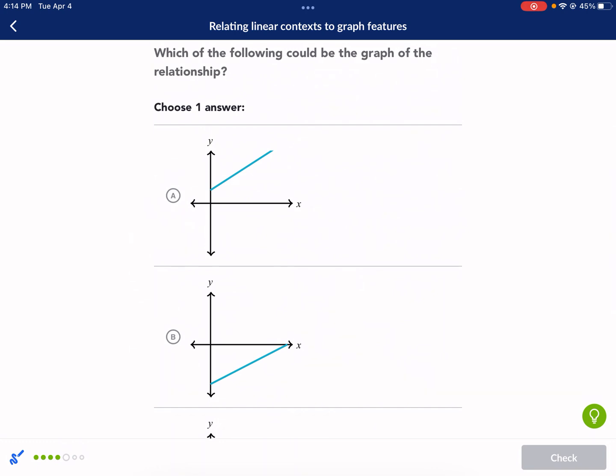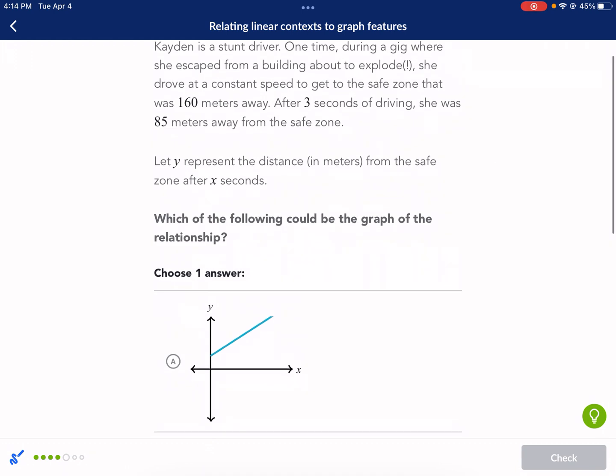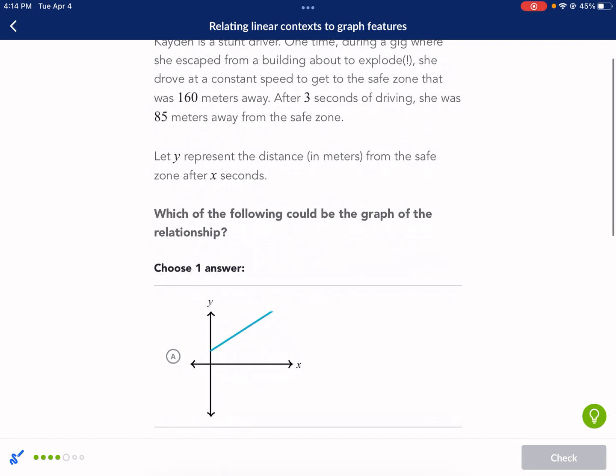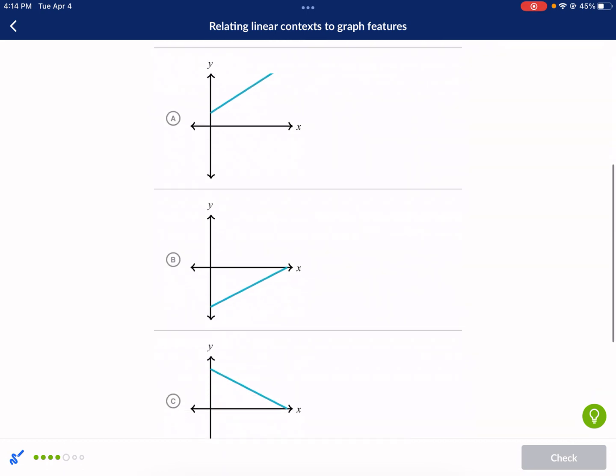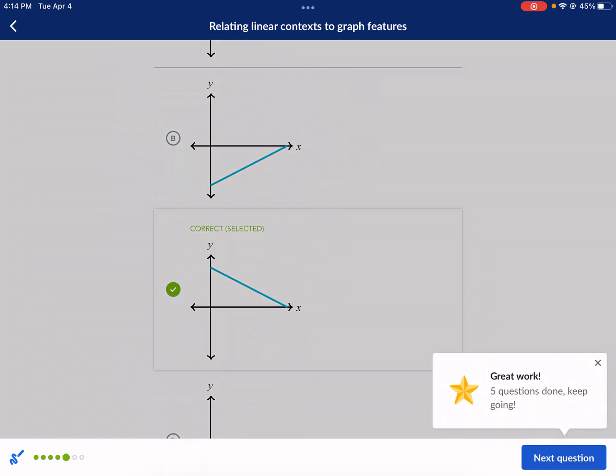We start off 160 meters. Then after three seconds, we get there. And after a certain number of seconds driving, you're finally going to arrive. I guess it could be B if you consider it a negative distance, but normally that's not the case. And then A, you would never get there. And that's saying you're driving away from the safe zone. It says trying to get to the safe zone. So that's going to be option C, final answer. All right. There we go.